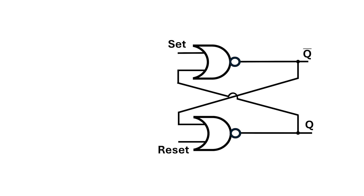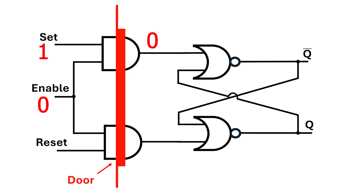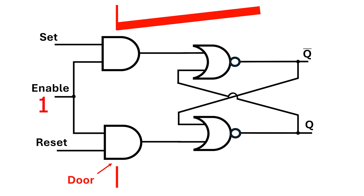The next thing I'm going to do is add in a barrier which controls when we can assert set and reset. The way I do this is with a pair of AND gates, where one input of each AND gate is tied to an enable signal. When enable is low, then asserting set won't get through to the latch — it's as though there's a barrier or closed door stopping set getting in. Similarly, reset can't get through either. But when enable is high, it's as though the door is open, and both set and reset can get through. We don't ever actually want both set and reset to be high at the same time, but we'll deal with that a bit later.